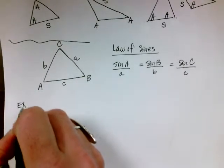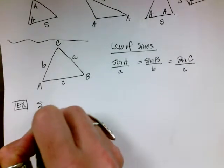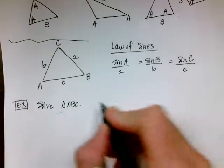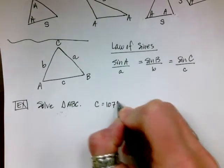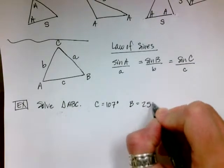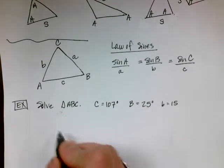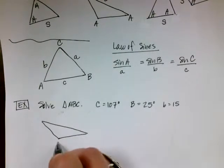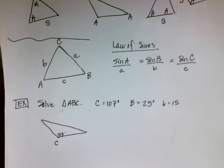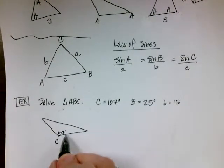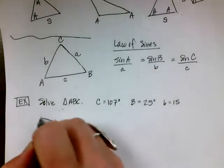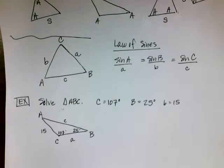Let's do some examples — I think that's the easiest way to learn the Law of Sines. Solve the triangle ABC. You're given that C is 107 degrees, B is 25 degrees, and little b is 15. So it's an obtuse triangle. I'm going to label C as 107 degrees — I don't know little c. I know angle B is 25 degrees and side b is 15. There's big A and little a.